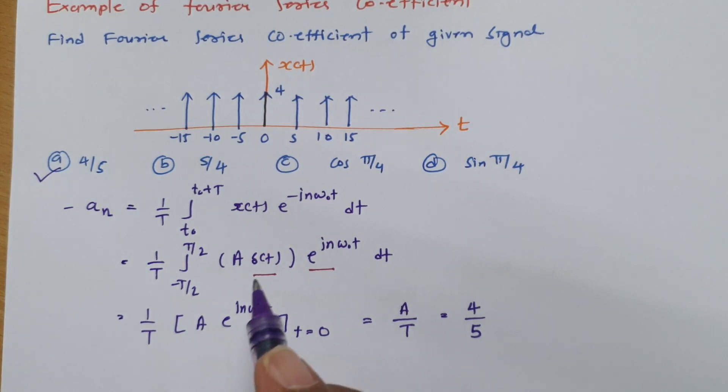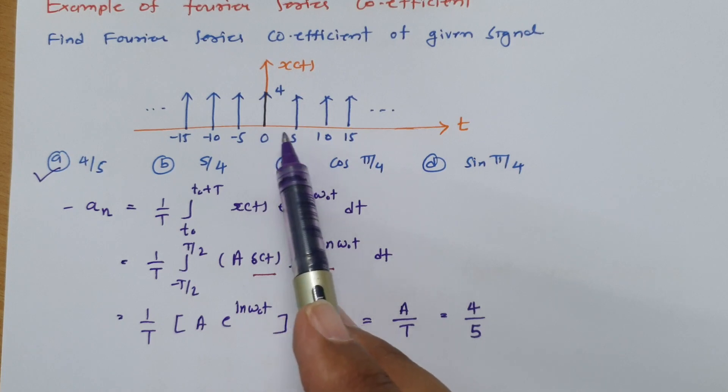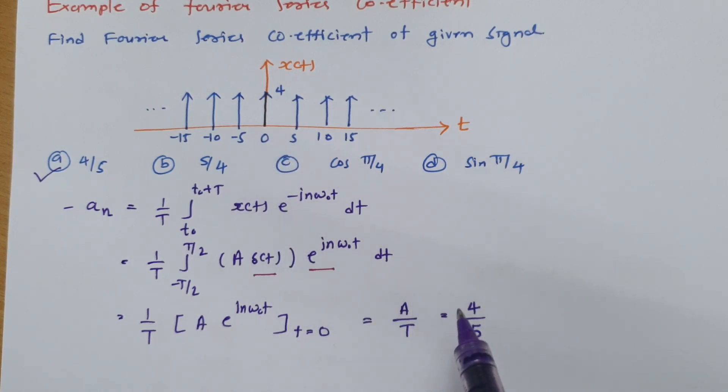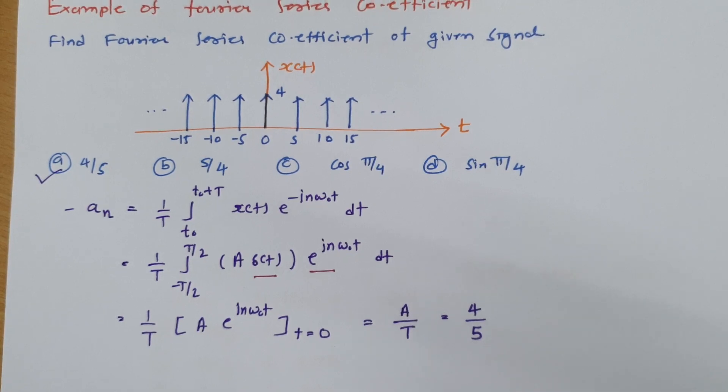You will have to take care when you integrate impulse function. It should have value at t equals 0, and then just place it. Here this is the generalized calculation a by T, but for this particular equation, amplitude is 4 and time between two successive impulses is 5, so 4 by 5 is the answer. I hope you have understood.